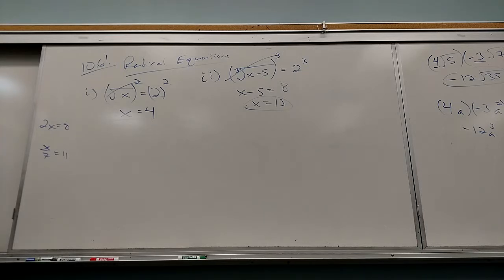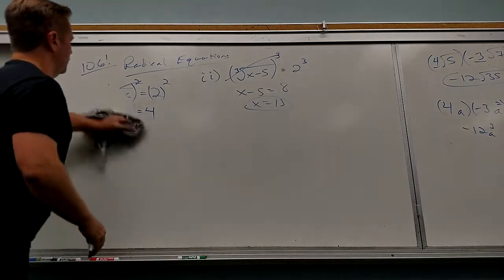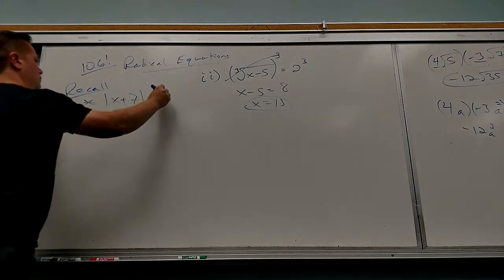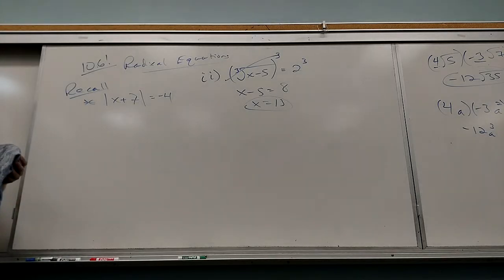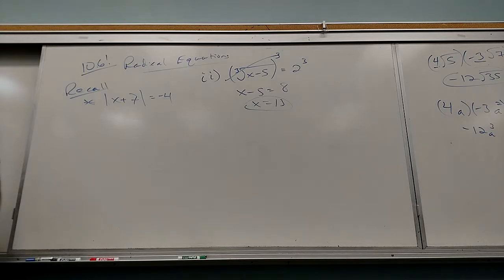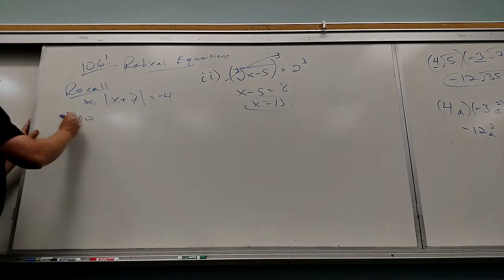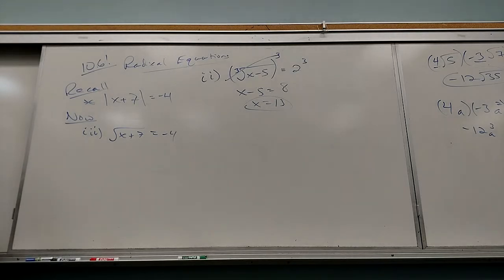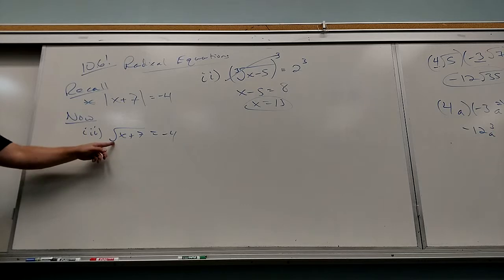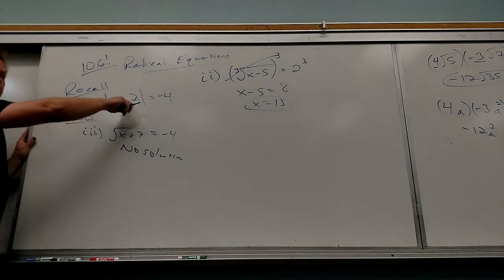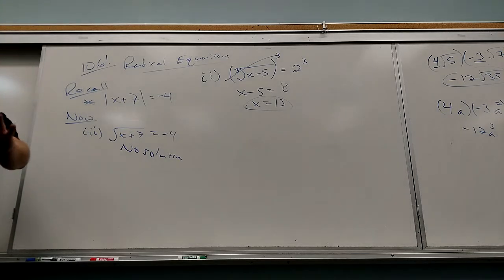Now let me show you a couple of trouble spots. Remember: if you had absolute value equal to negative 4, you'd write no solution — you can't have absolute value equal to a negative number. Same thing here: if I had square root of (x plus 7) equals negative 4, by definition radicals come out positive — the principal root — so it can't come out negative. There's no solution. If you squared both sides anyway you'd get x equals 9, but that's wrong — try it: square root of 16 is positive 4, not negative 4.